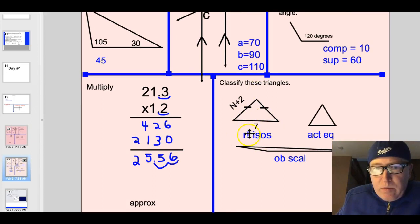And then classify these triangles. This one here is a right triangle. This is a right angle up here. It's a right isosceles. This one here is just an equilateral triangle and all equilateral triangles are acute. This one here is an obtuse and it is scalene.